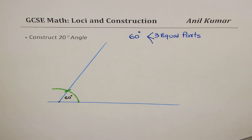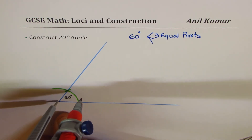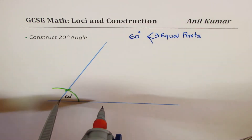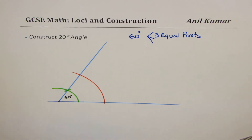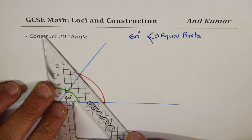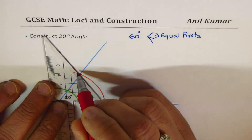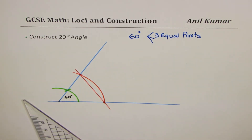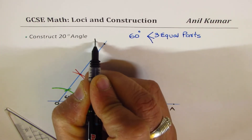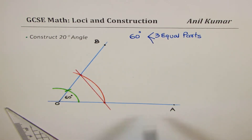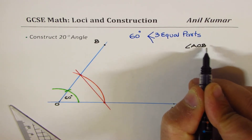So to get 60 degrees, let's open up bigger arcs so the construction is clear. I'm going to make a bigger arc — the angle is 60 degrees and this arc cuts at two points. Let me join those two points. The point O is here, and we have point A and point B, so angle AOB is 60 degrees. Let's call the two arc intersection points P and Q.